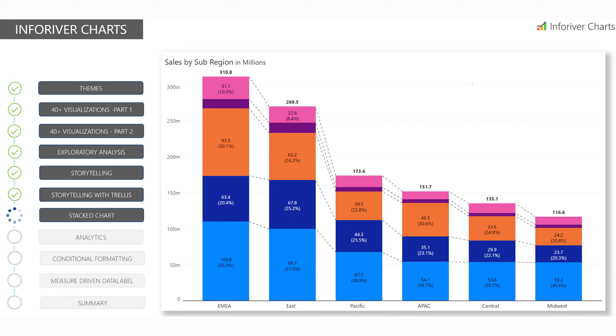Stacked charts also come with integrated ranking and sorting. Connector lines, series labels, and column totals are just a few of the special features available for these visuals.